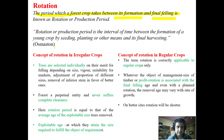Osmasten puts the same definition: rotation or production period is the interval of time between the formation of a young crop by seeding, planting, or other means and its final harvesting. So the meaning is the same.